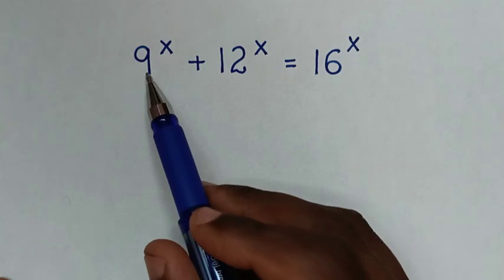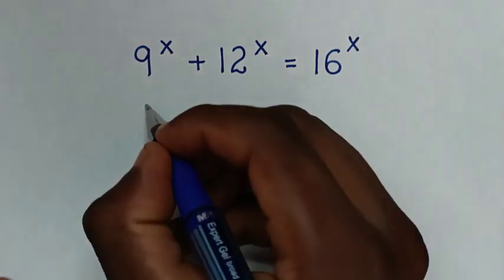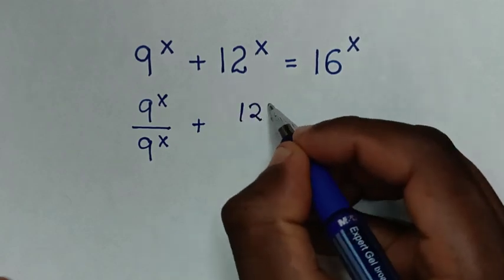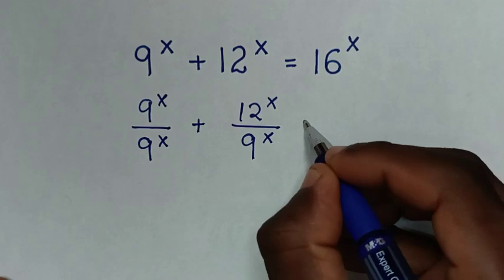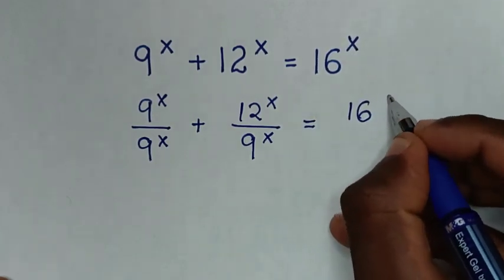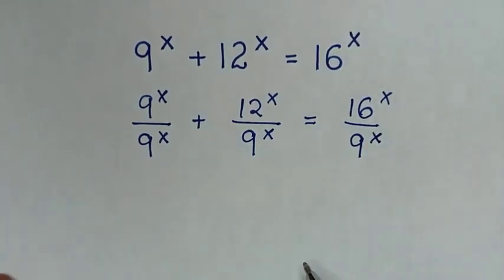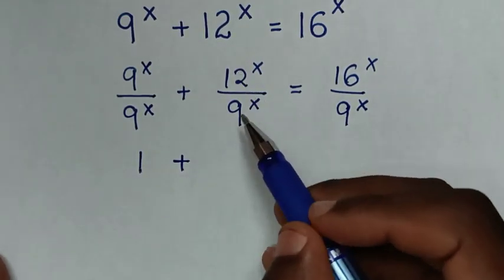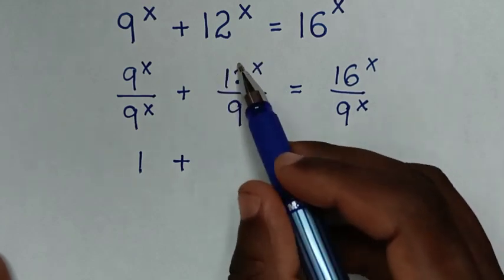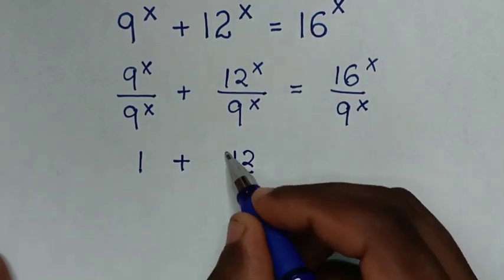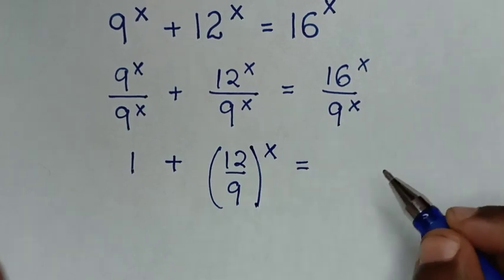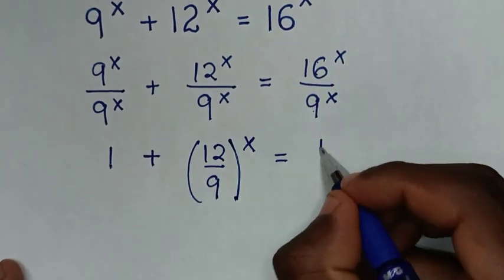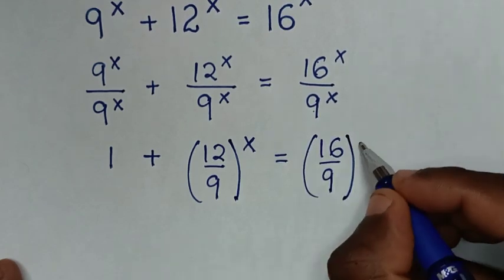In the first step we'll divide by 9 power x on both sides. So it will be 9 power x divided by 9 power x, plus 12 power x divided by 9 power x, is equal to 16 power x divided by 9 power x. Then 9 power x divided by 9 power x is 1.